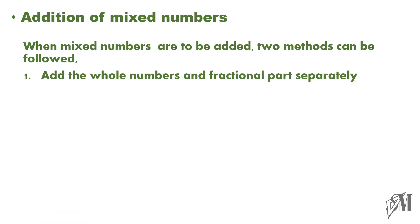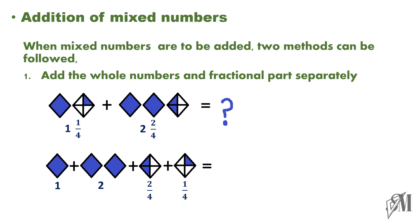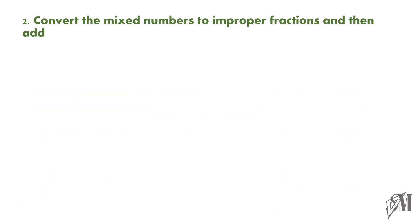The first method is to add the whole numbers and the fractional parts separately. Look at this example: 1 and 1 over 4 plus 2 and 2 over 4. Here, first you add the whole numbers and then add the fractions. So, 1 plus 2 is 3, and 2 over 4 plus 1 over 4 is 3 over 4. So, your final answer is 3 and 3 over 4. You can follow this method, or the second method is to convert the mixed numbers to improper fractions and then add.